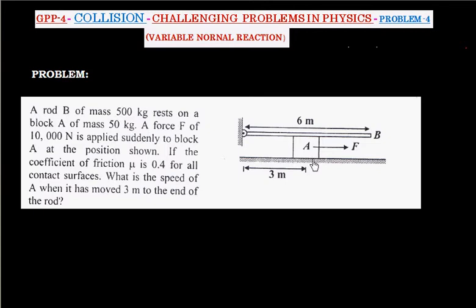There is friction between this surface and block, and rod and block. This friction will basically try to retard the motion of block A. We have to find velocity of block A when it reaches to the end of rod B.